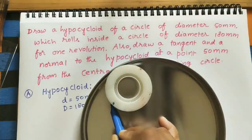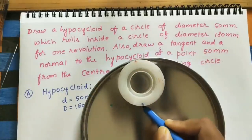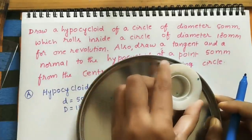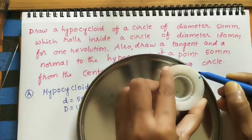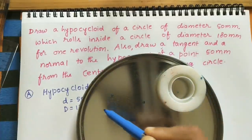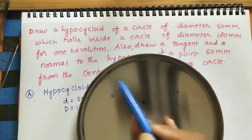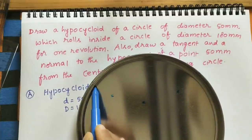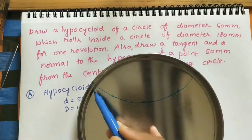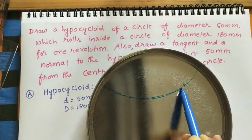As the smaller circle rotates, the P point moves and I mark its successive positions. After the circle completes one full rotation, we have all the P points from the starting point to the end point. Joining all these P points gives us one curve — this path is known as the hypocycloid.